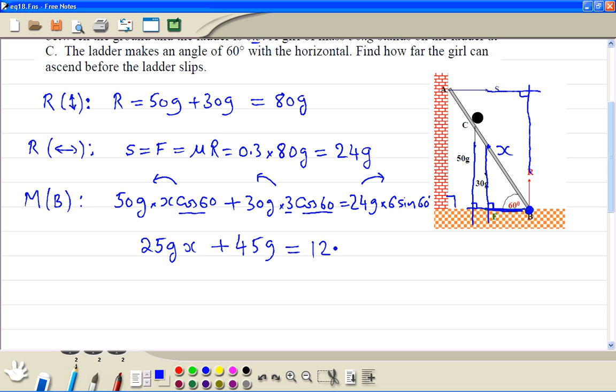We get from the calculator 1222.135. Then we subtract 45g from both sides. 25gX is equal to 381.135.